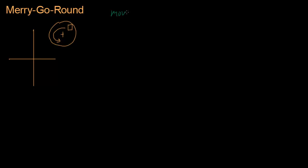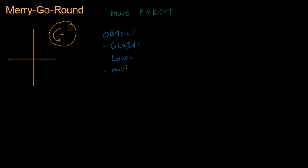We had to do all this matrix math to get that box to spin properly. So this video we're going to develop a way to automate this process using what's called a move parent. It just involves reorganizing slightly the way that we organize our entities. So we have this object, and what we had before was a global transform — we're going to keep that. But now we're going to add some new ones: a local transform and a move parent.